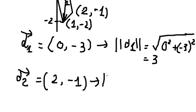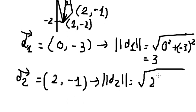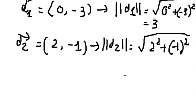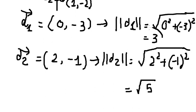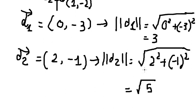Now we can find the length of D2. That is the square root of 2 squared plus (-1) squared, which equals the square root of 5. That is the final answer. This is the end — thank you for watching.